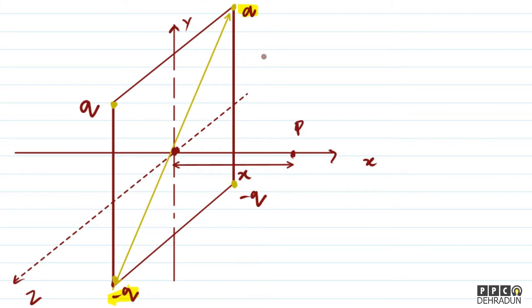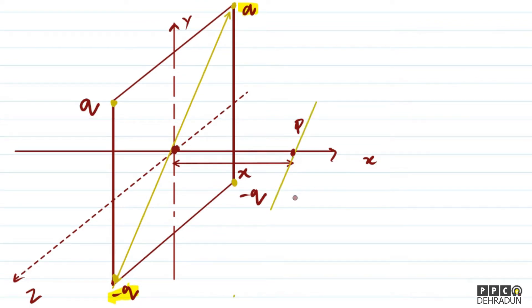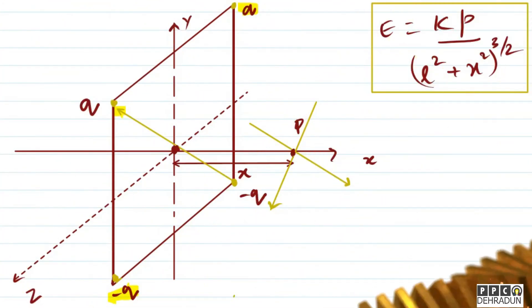For an equatorial point, the dipole's field direction points in the opposite direction. The magnitude is E equals kp divided by L squared plus x squared, raised to the power 3 by 2, in the opposite direction.